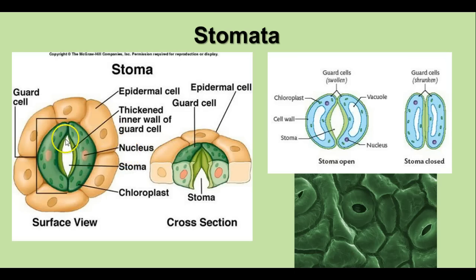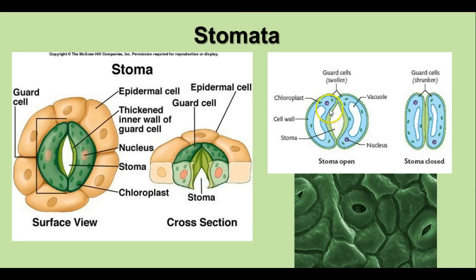The stomata are openings in the surface of the leaf — here you can see a photomicrograph of some, surrounded by two guard cells. The guard cells have a very thickened inner cell wall. When the plant has plenty of water, the guard cells get swollen, causing the outer walls to push out because they're more flexible than the inner walls, pulling the inner walls apart and opening the stoma to allow water vapor to exchange. When the plant needs to conserve water, the cells shrink back and close the stomata, which helps prevent wilting.